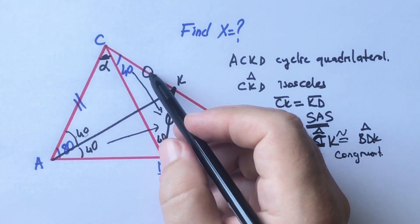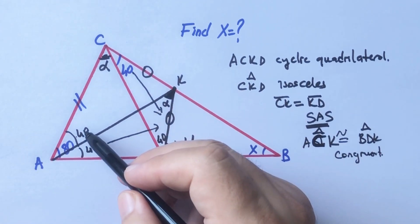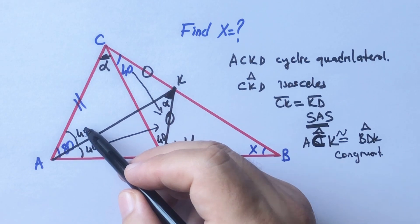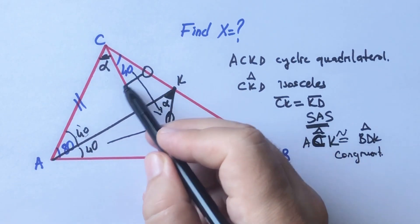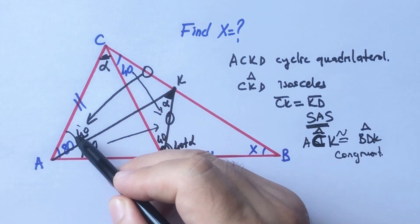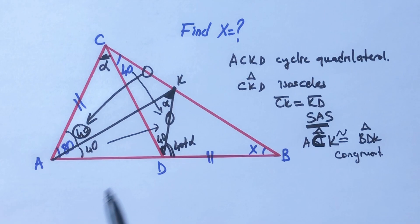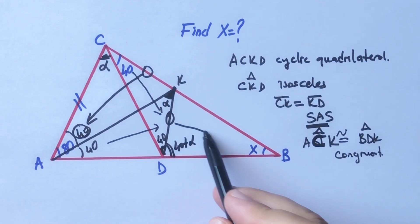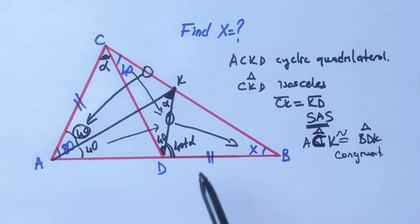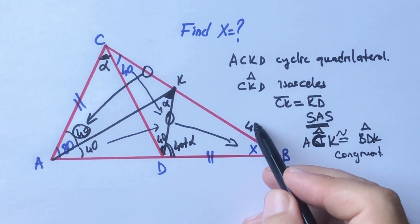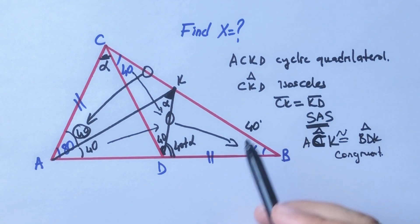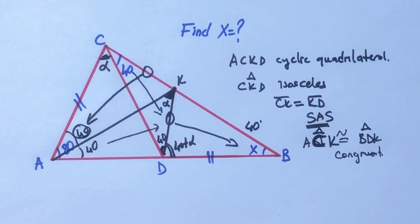Therefore, since congruent triangles have the same angles and side lengths: if there is a 40 degree angle opposite one length, then the angle opposite the corresponding length must also be 40 degrees. That was the first method.